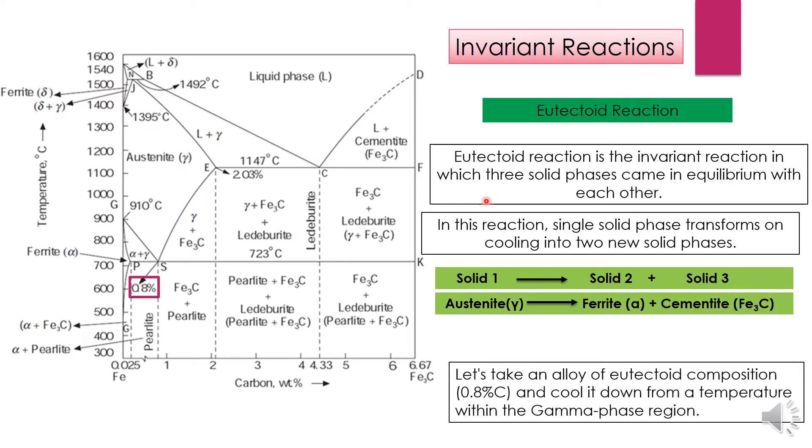To explain this mechanism, let's take an alloy of eutectoid composition which is 0.8 percent carbon and cool it down from a temperature within the gamma phase region, which is the austenite region.